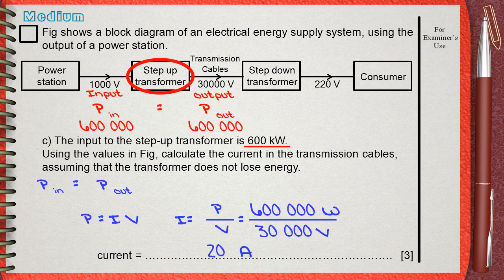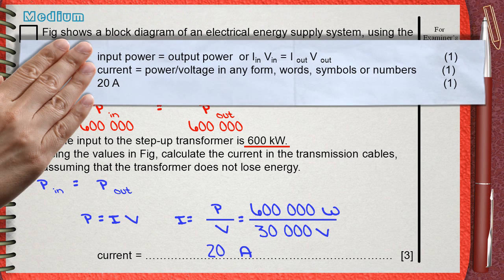Do not forget the unit. Three marks on the question. The first mark is to mention that for a transformer, input power equals the output power. Also this can be written in another form.